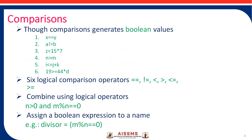We can also perform comparison operations on boolean values. There are six comparison operators: equal to, not equal to, less than, greater than, less than or equal to, and greater than or equal to. In examples one through six, we use these different logical comparison operators, each yielding a boolean result of either true or false.